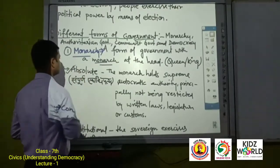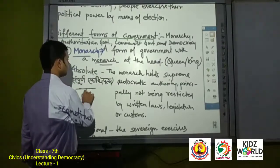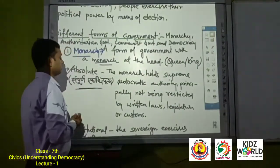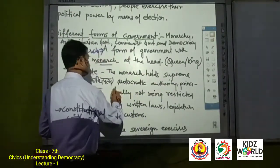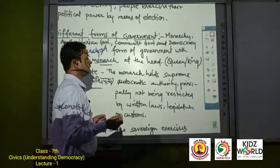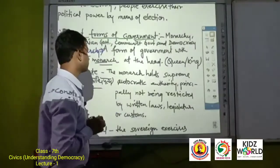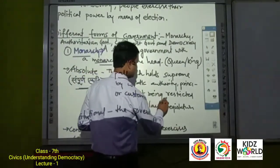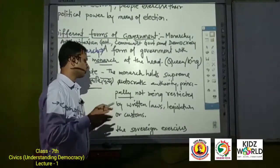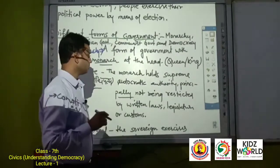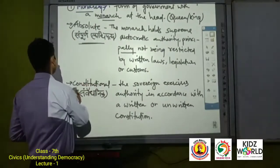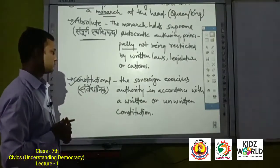Absolute Monarchy means Sampurn Ekadhipatya — राजतंत्र जिसमें पूर्ण रूप से किसी राजा को सत्ता मिली हुई है। The Monarch holds Supreme Authority, मतलब राजा या रानी अपनी संपूर्ण ताकत अपने कब्जे में रखता है, principally not restricted by written laws, legislature, or customs.